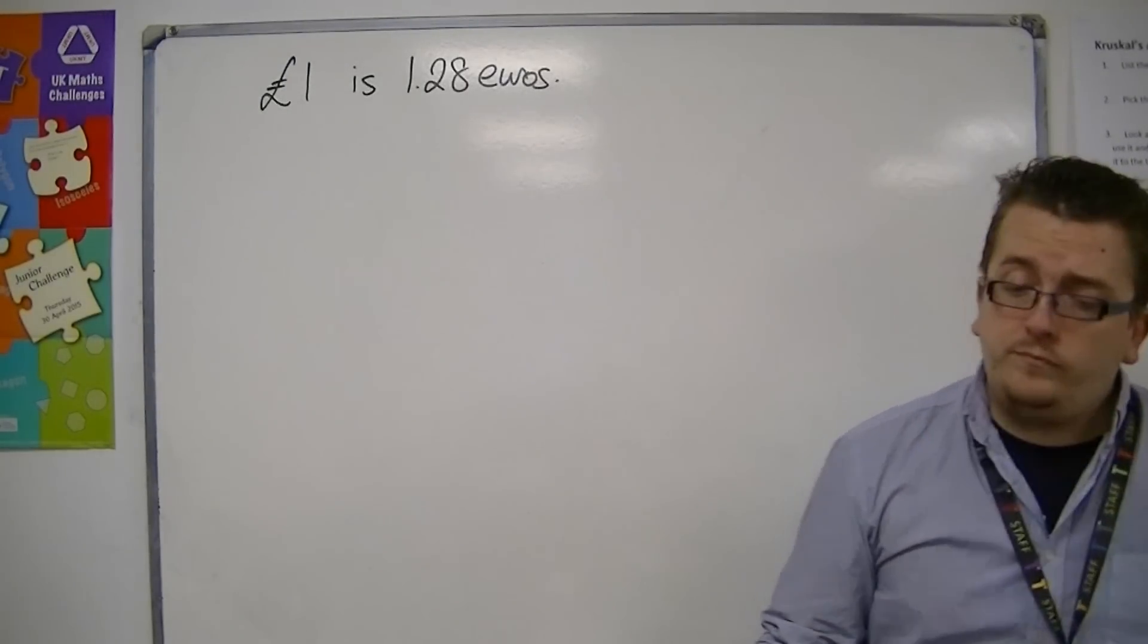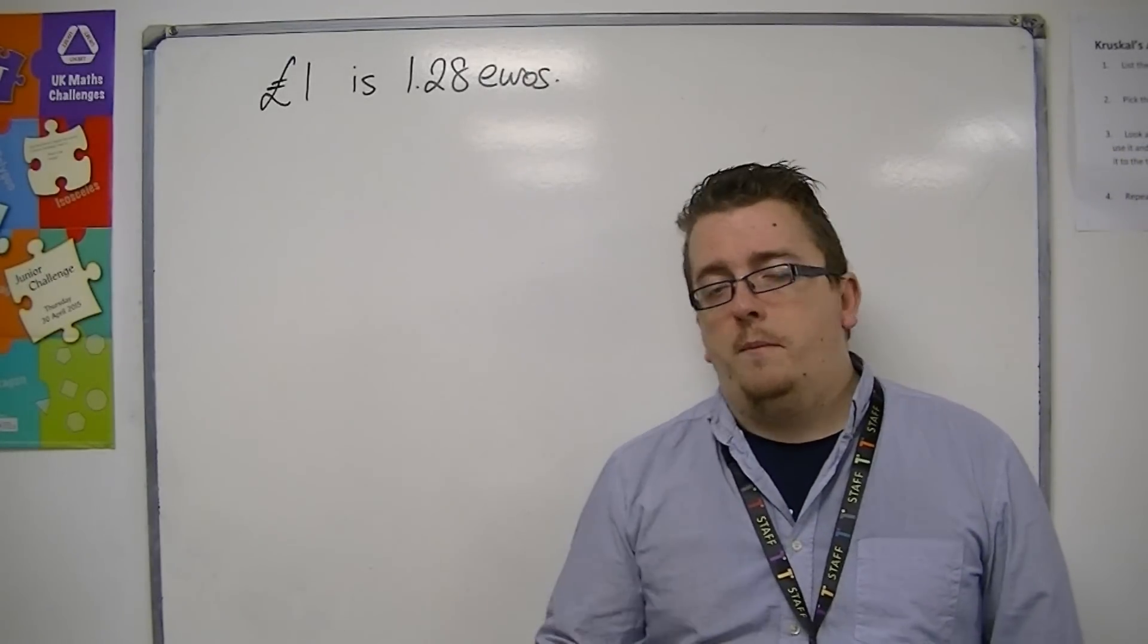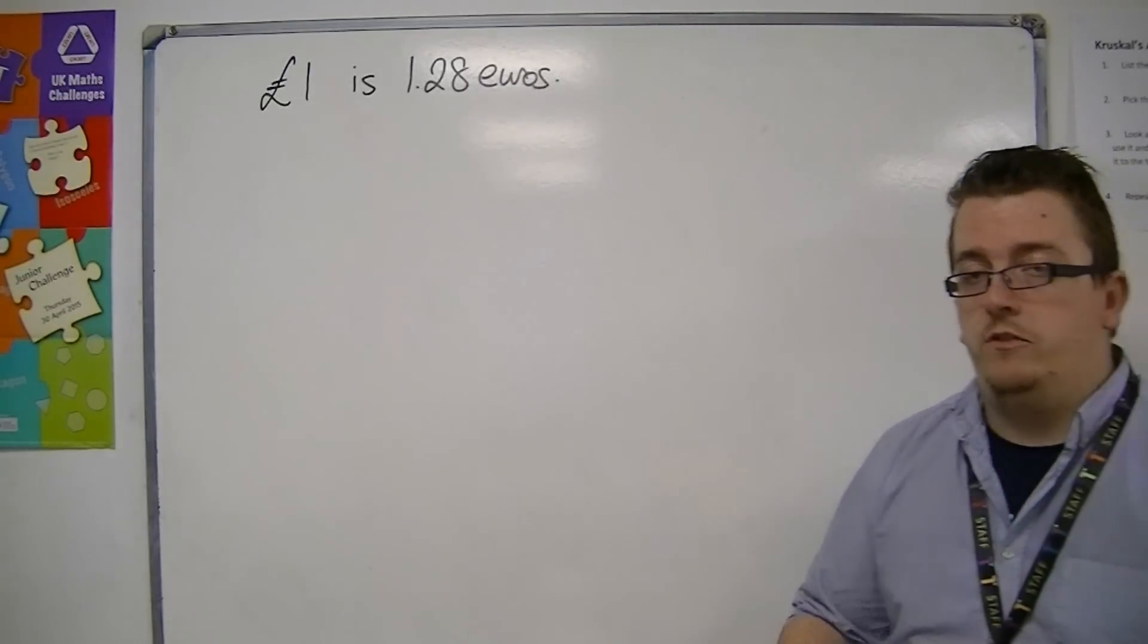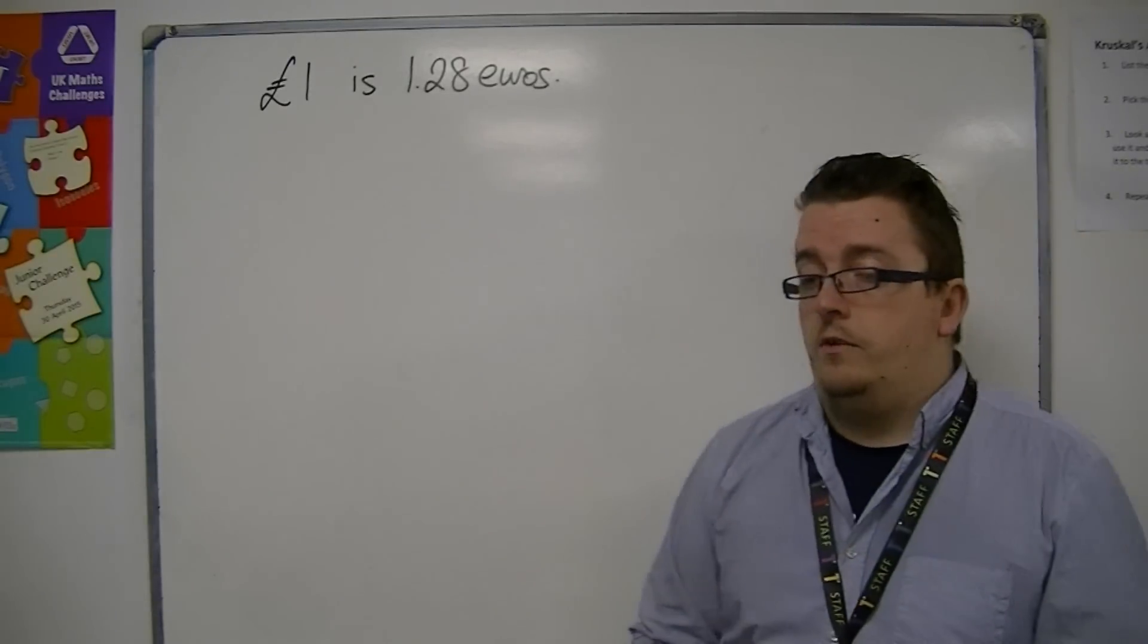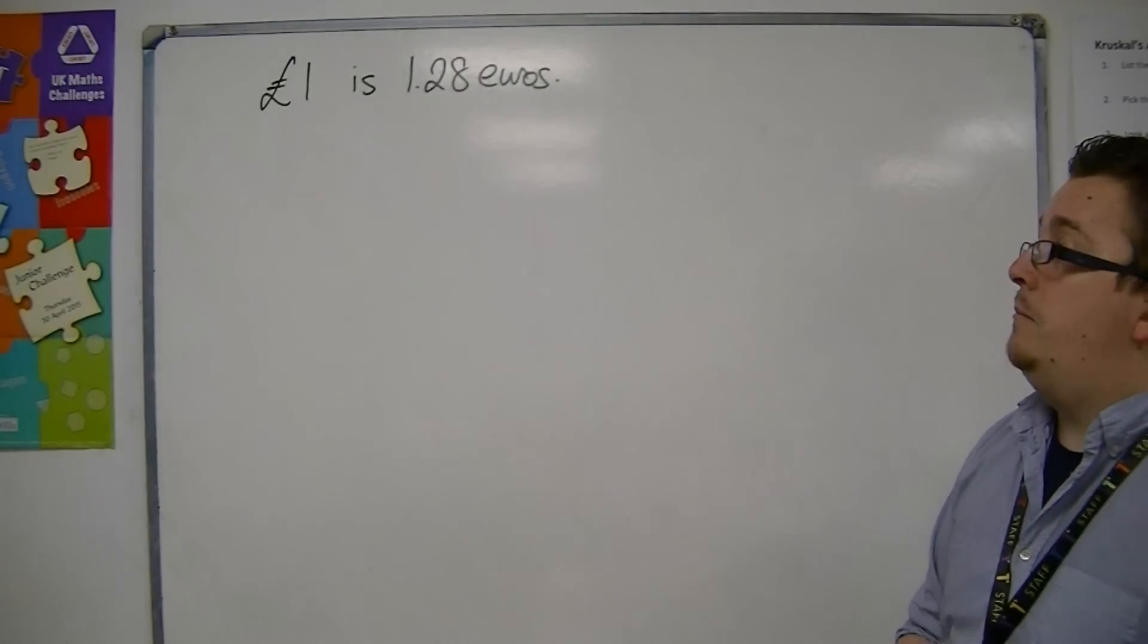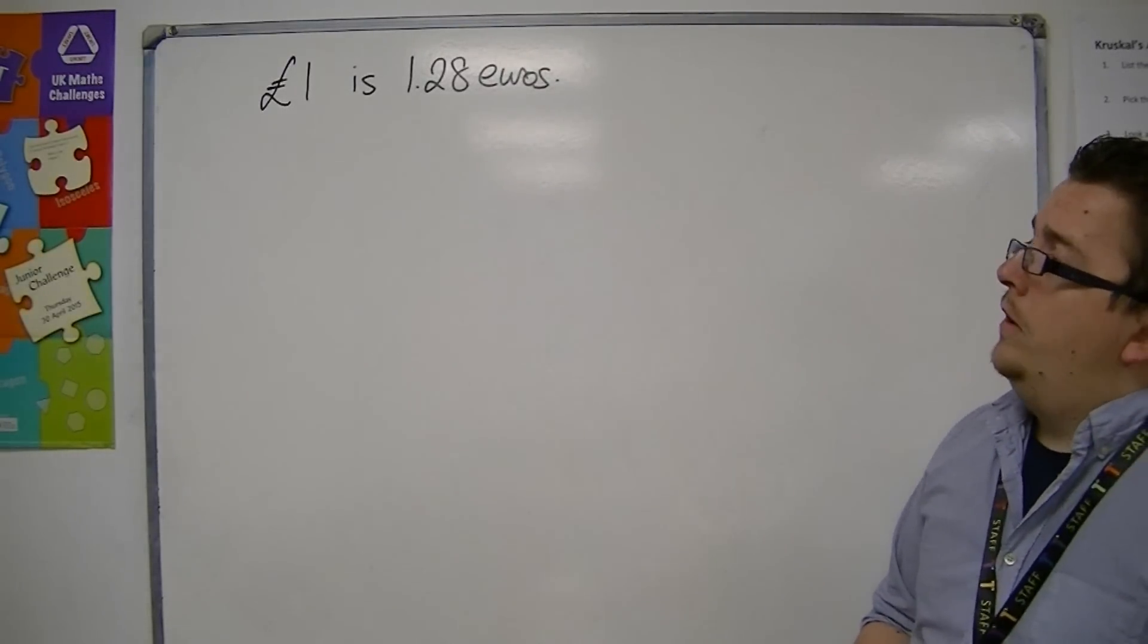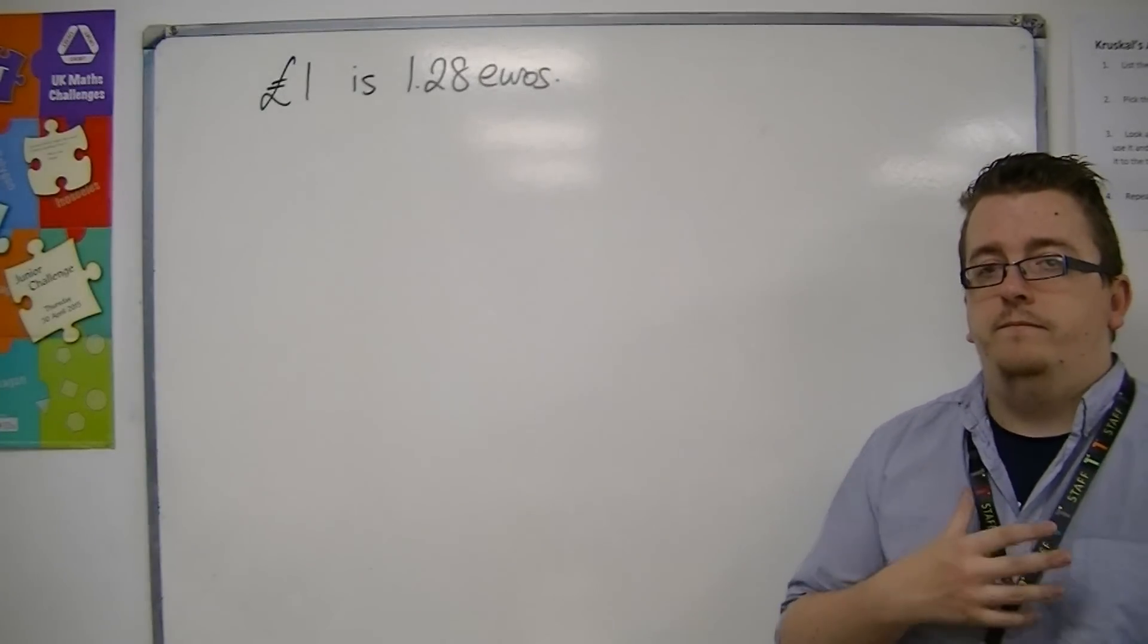So ten years ago or so a pound would have bought you about 1.5 euros. So exchange rates fluctuate continually. And so depending on next year it might be 1.2 euros, it might be 1.35 euros. So they change. So if you work from an older textbook the exchange rates will be out of date very quickly.